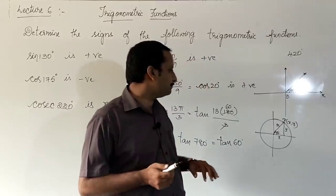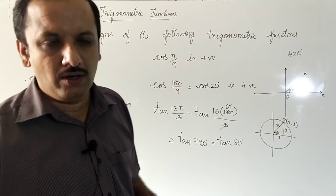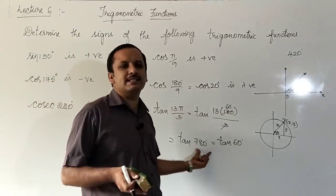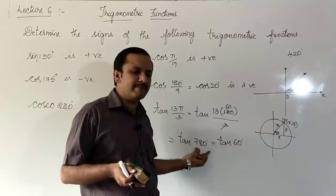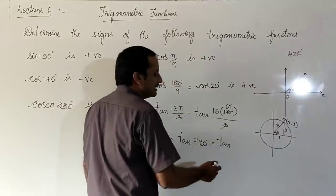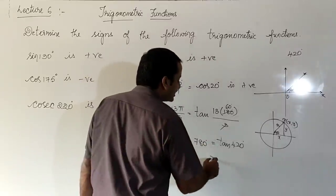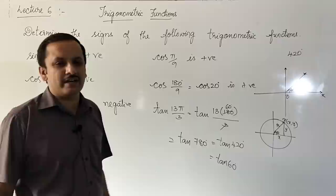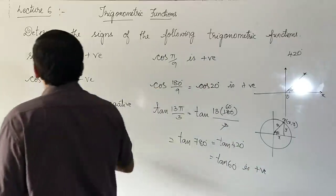After that, we can identify whether the function is positive or negative. For 780 degrees: 780 − 360 = 420, still greater than 360, so subtract another 360 to get tan 60 degrees. 60 degrees is in the first quadrant. In the first quadrant all are positive, so tan 60 degrees is positive.